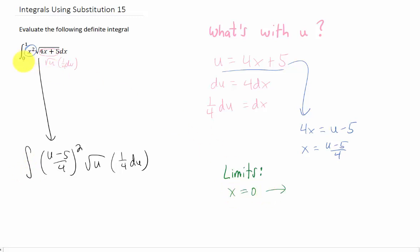The lower limit of integration is x equals 0 here, so using our u substitution, we get that u will turn into 4 times 0 plus 5, which is 5. Our upper limit of integration is x equals 1, and using our u substitution, we get that that would make our u equal to 4 times 1 plus 5, which is 9.